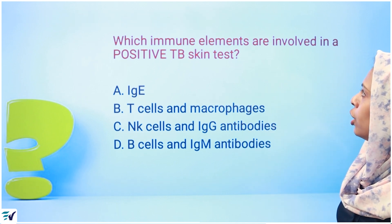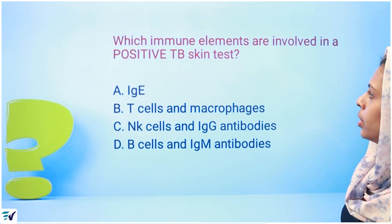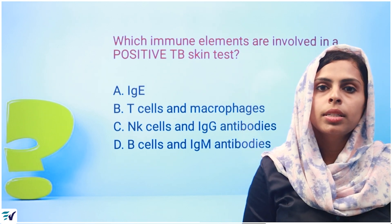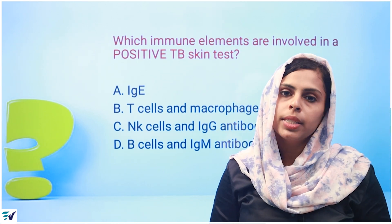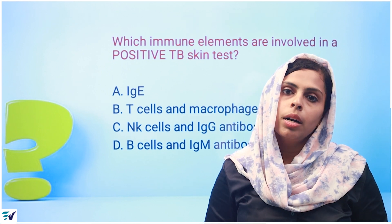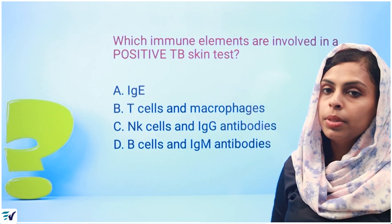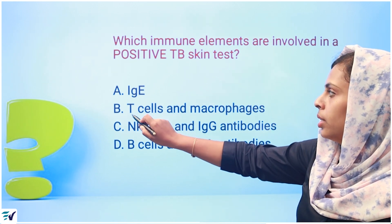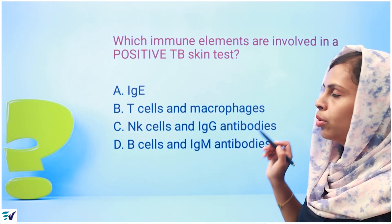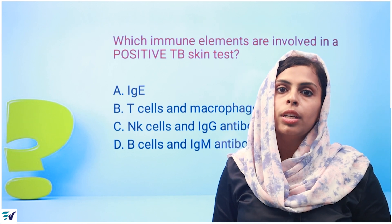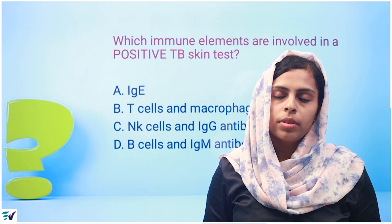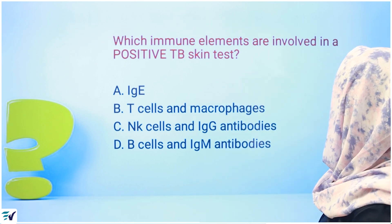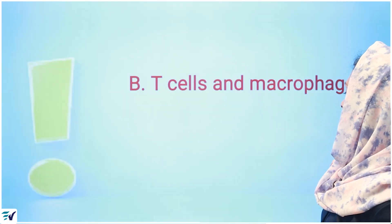Next question: which immune elements are involved in a positive TB skin test? For a positive TB skin test, we will look at type 4 hypersensitivity. The answer is T cells and macrophages, which are involved in T cell-mediated hypersensitivity.